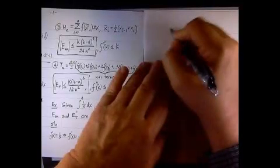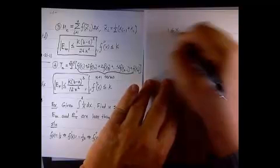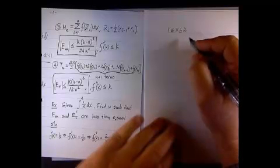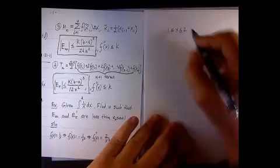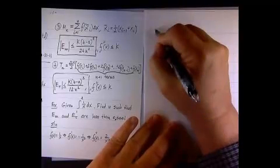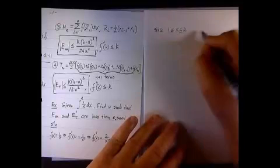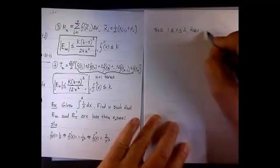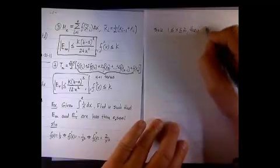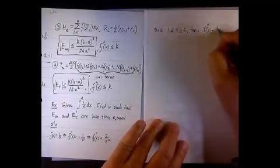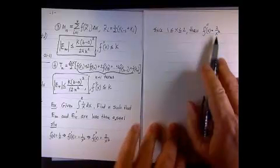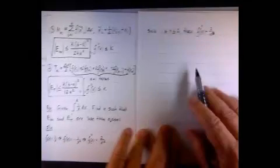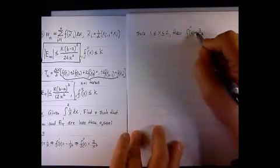So, now we follow, and we said since, remember that x is bounded by 1 and 2. x is a value between 1 and 2. Since x is a value between 1 and 2, then f double prime, which is 2 over x cubed, the biggest value of 2 over x cubed will be when x equals 1.